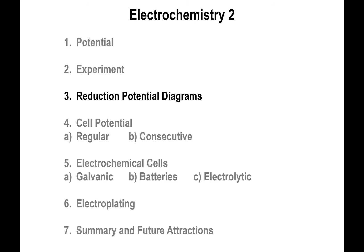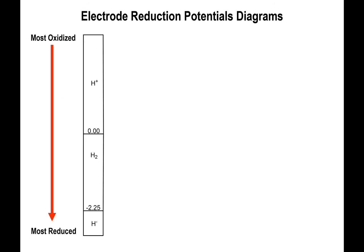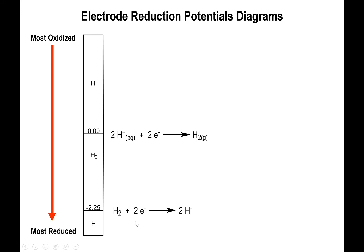Let me revisit the Latimer diagrams once more. When you look at the diagrams for elements, the upper portion is the most oxidized version of the element, and the bottom portion is the most reduced version. At each boundary, what's on top is your reactant and what's on the bottom is your product — you balance that half-reduction reaction. For hydrogen, balance the non-oxygen and non-hydrogen atoms, then balance the hydrogens — giving an overall 2+ charge on the left and zero on the right — so two electrons go on the reactant side, confirming reduction going top to bottom. Similarly, H2 becomes the reactant and H− becomes the product, requiring two electrons to balance the charges.